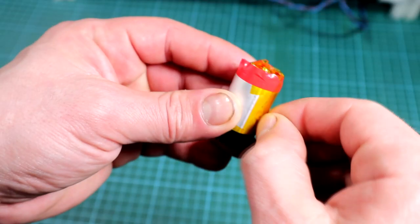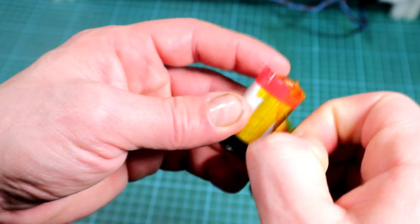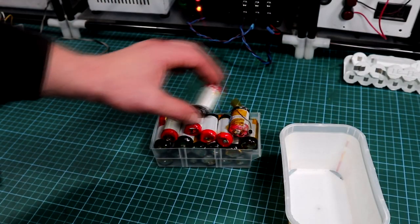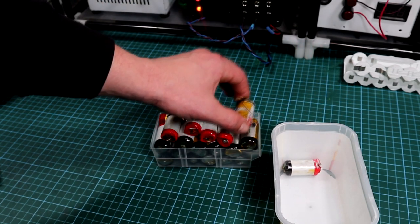I start by getting the cells sorted and removing the cap top from them, prior to inspect the cell. Any cells which are a bit dented or severely damaged will be going straight to my recycling box.